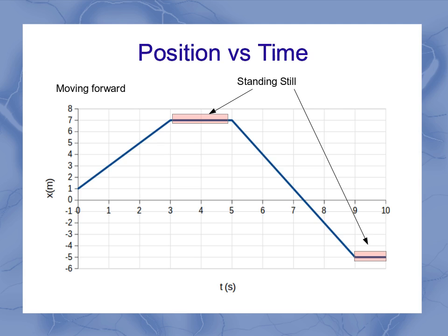If you're moving forward, then you should have a slope moving up along your graph. And if you're moving backwards, you should have a slope going downwards on your graph.